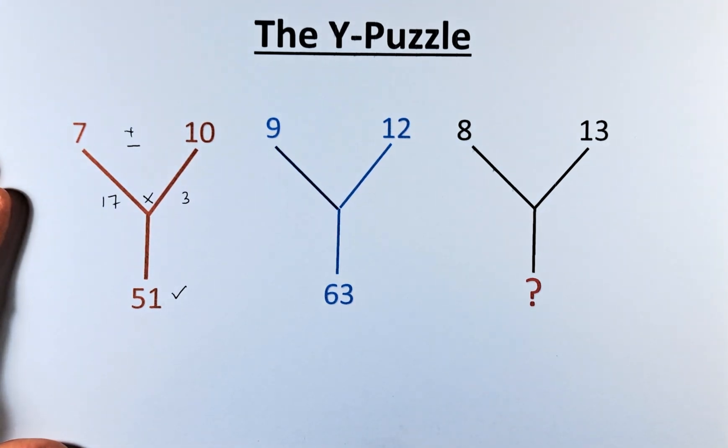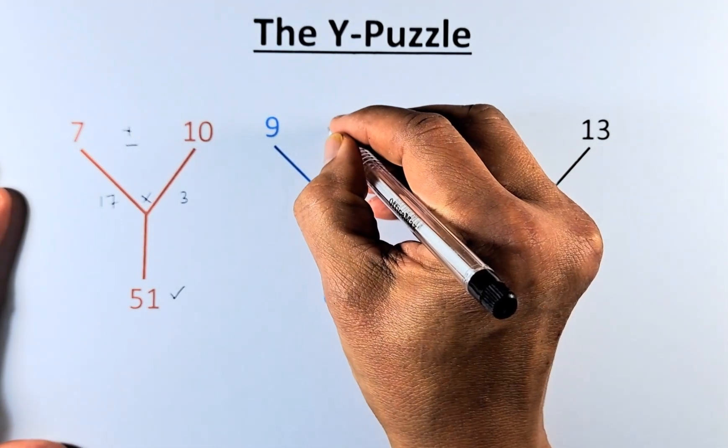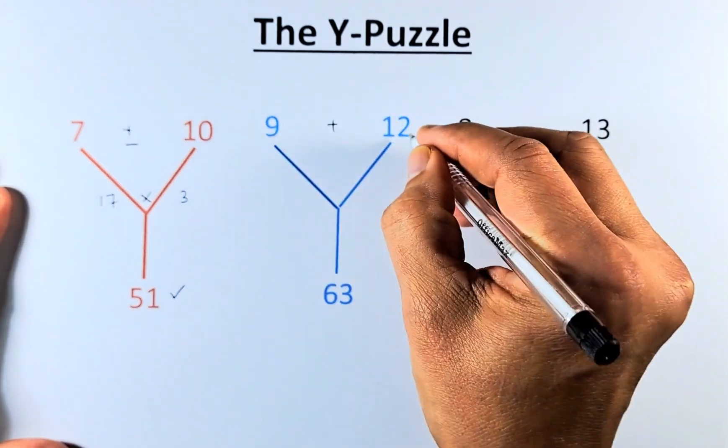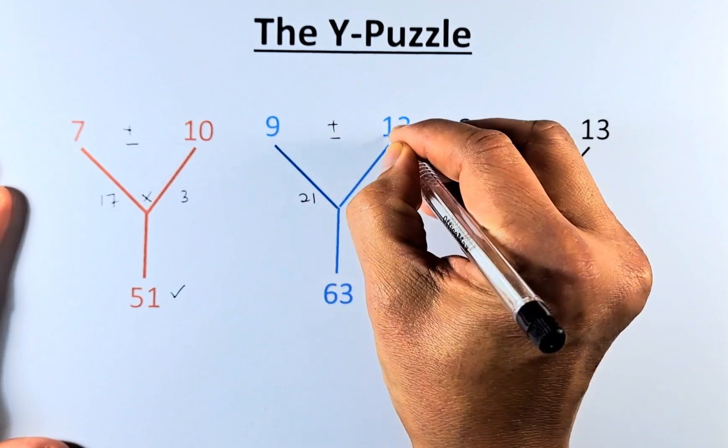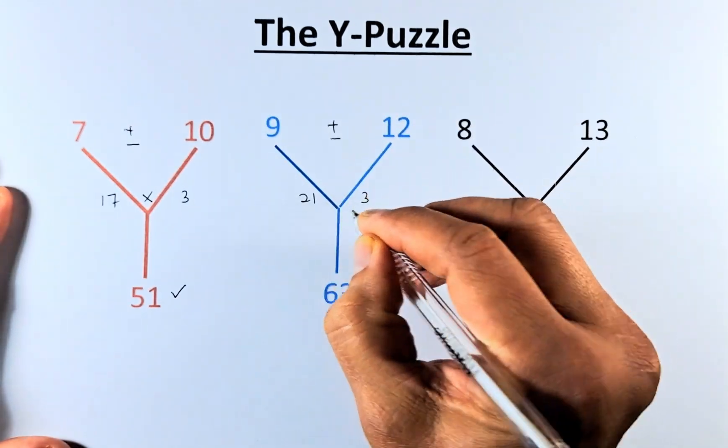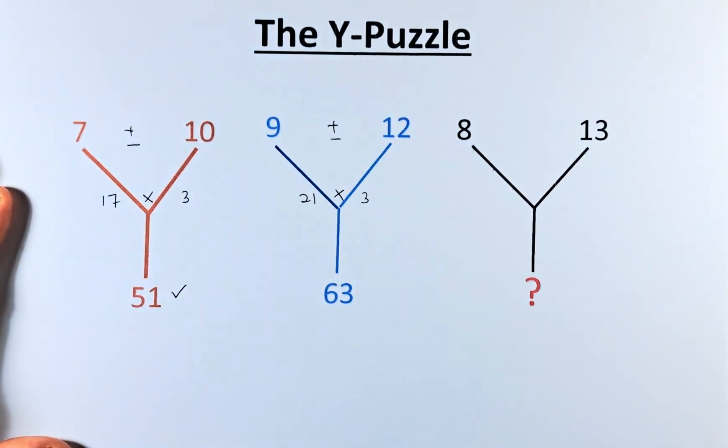Similarly, 9, 12 and 63, we're going to add them up first. So 9 plus 12 is 21. 12 minus 9 is going to be 3. And then we're going to multiply 21 times 3. And that will give us 63.